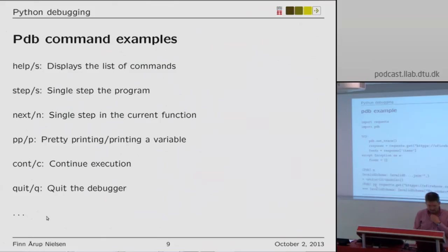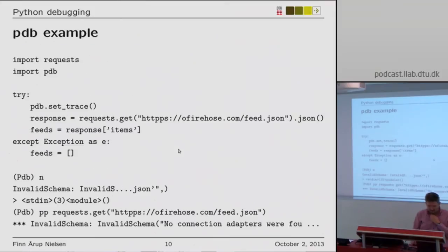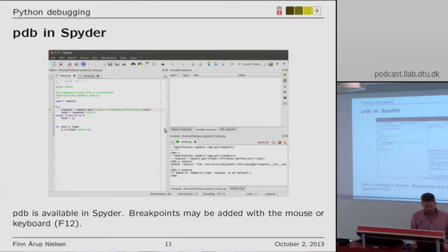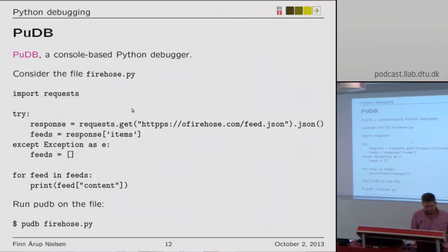I can then use 'pp' for pretty printing a variable — printing the request to the old firehose method. I attempt to see what's wrong, and I see there's an extra 'p' — it's 'https' which is what's wrong. pdb is available in Spyder, for example, where you can easily set breakpoints with the mouse and keyboard.